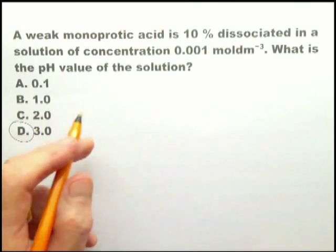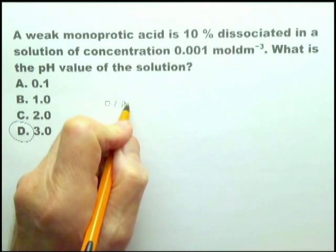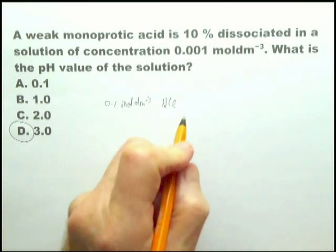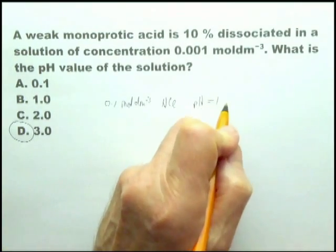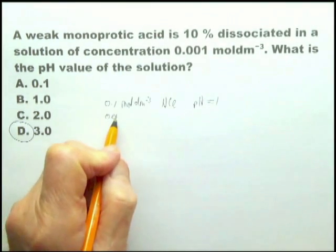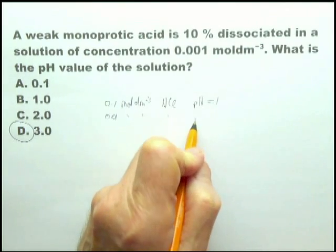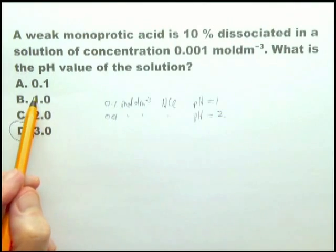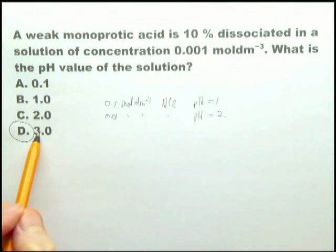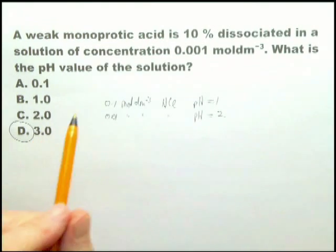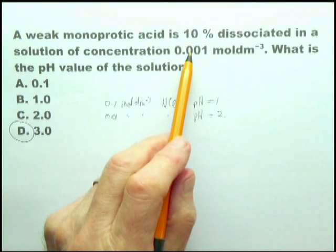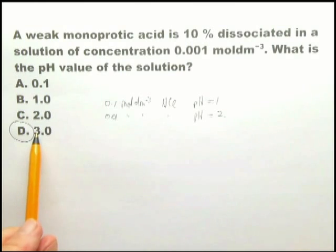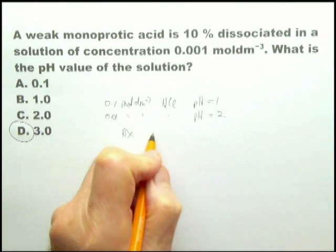Therefore I immediately go for 3. Now, there are one or two things the IB really expects you to remember. If you have a 0.1 mol dm⁻³ solution of HCl, they expect you to remember that the pH equals 1. If you have a 0.01 mol dm⁻³ of HCl, they expect you to remember that pH equals 2. And for those two reasons, it can't be 1 or 2, therefore it must be 3.